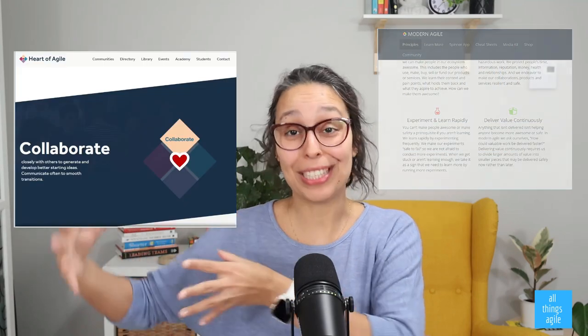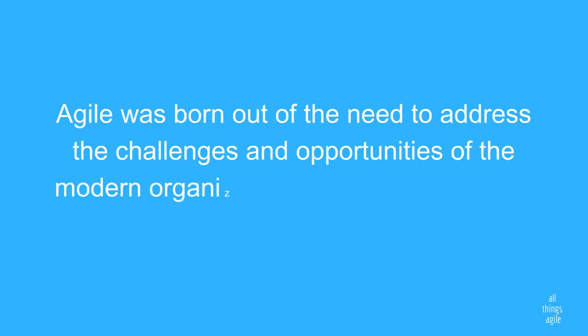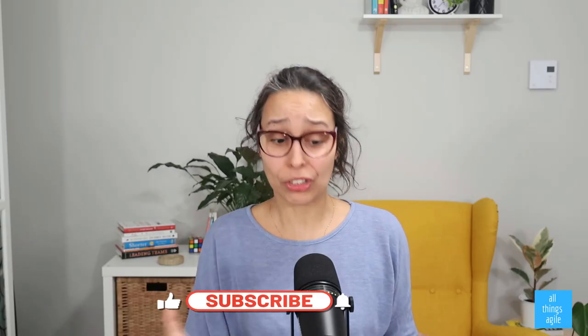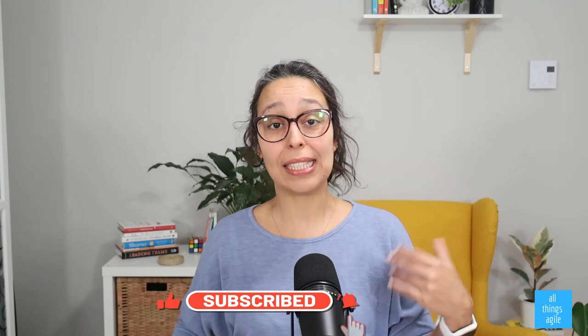Agile has been evolving, and initiatives such as Modern Agile — which places great emphasis on fast product discovery and better ways of collaborating — and Heart of Agile, a brainchild of manifesto contributor Alistair Cockburn, which places emphasis on the learning part of agility, have emerged. New frameworks keep appearing every day. The important message here is that Agile was born out of the need to address the challenges and opportunities of modern organizations where technology, business, and customer expectations are changing rapidly. Agile, or gaining agility, is a way of addressing these three dimensions together.